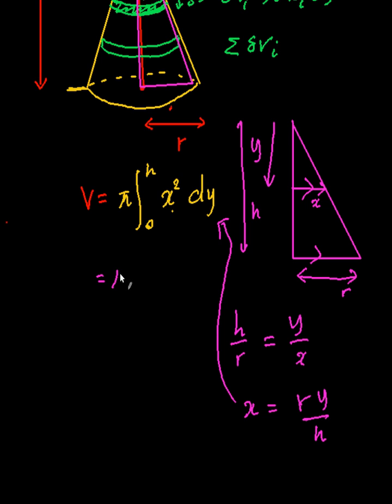So this will be equal to pi. So x squared is going to be r squared y squared on h squared. I need to integrate this from zero to h dy. So this will be equal to, taking the constants outside, r squared pi, and then h squared at the bottom. This will be y cubed on three, zero to h.